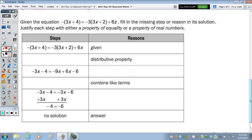So let's take a look at 6. Given the equation, -(3X + 4) = -3(3X + 2) + 6X. This should be an X. That's a typo. So fill in the missing step, or reason in its solution, and justify each step with a property of equality or a property of real numbers. So from the first line to the second line, the step is missing. But it says you use the distributive property, so let's distribute. So negative times 3X is negative 3X. Negative of a positive 4 is negative 4. 3 times 3X is 9X. 3 times 2 is a positive 6. And then bring down the 6X.